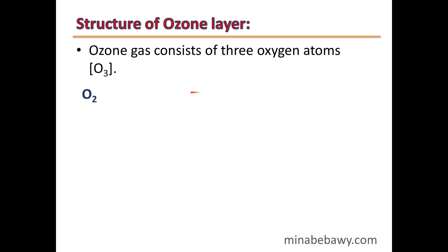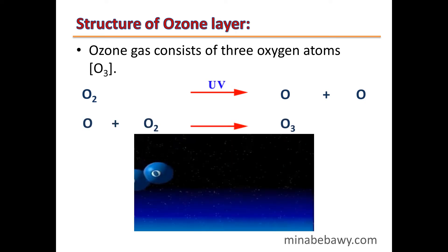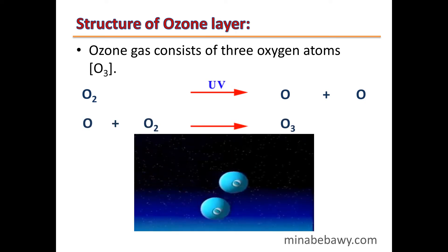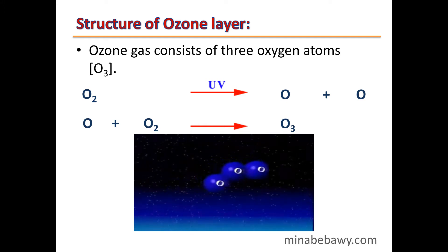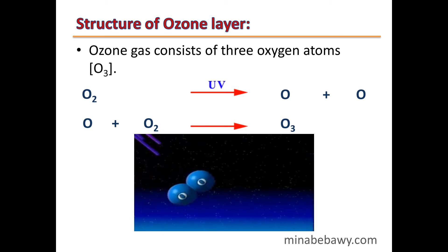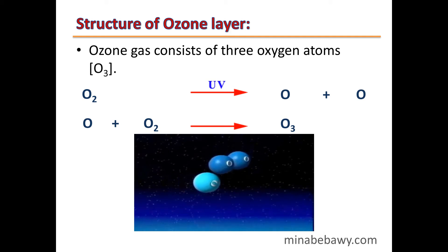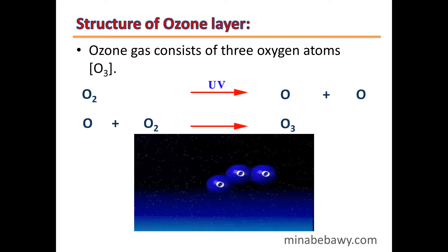What is the structure of the ozone layer? Ozone gas consists of three oxygen atoms. By the help of ultraviolet radiations, the bond between each two oxygen atoms is broken and two free oxygen atoms are formed. Each oxygen atom combines with an oxygen molecule forming one molecule of ozone. So ultraviolet helps in the formation of the ozone molecule.